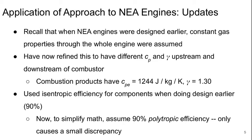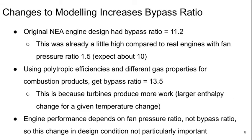Before applying this approach to the new efficient aircraft engines, there are a couple of updates to the modeling approaches. We are now using different gas properties in the compressors and then downstream of the combustor. And whereas we designed for 90% isentropic efficiencies of all components, we are now designing for 90% polytropic efficiency. This means the procedure for determining the behavior of the low pressure system, as well as some temperatures and pressures in the high pressure system for the new efficient aircraft engines, has to be recomputed.